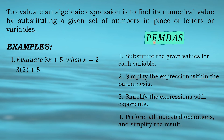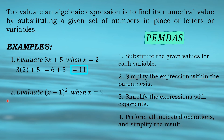PEMDAS stands for: Parenthesis, Exponent, Multiplication, Division, Addition, and Subtraction. Since we have no exponent and only one number inside the parenthesis, we proceed to multiplication/division. In our solution, the multiplication part is 3 times 2, so we first multiply 3 by 2 before adding 5. So, 3 times 2 is 6, plus 5. Then, proceeding to addition: 6 plus 5 is equal to 11. That is the final answer.